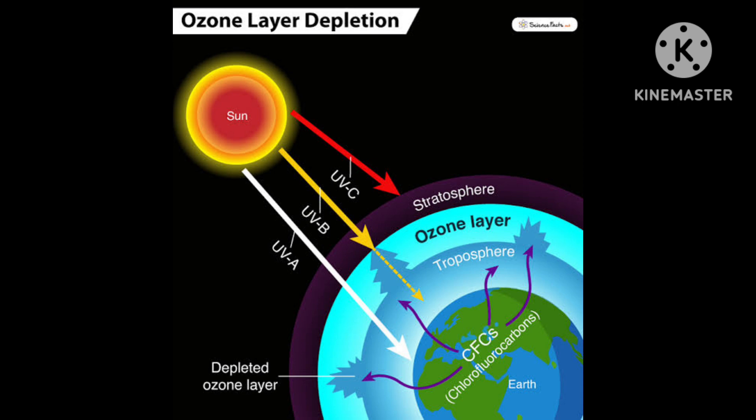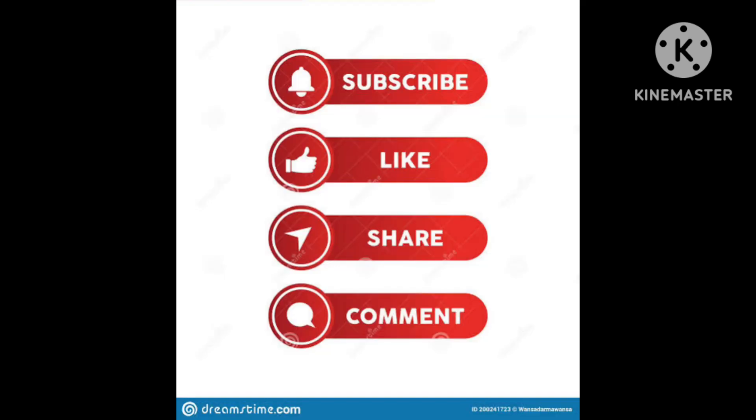That is why ozone layer depletion must be stopped. CFCs must be controlled and used judiciously, ensuring they do not escape into the atmosphere. If depletion continues, more UV rays will reach Earth and harm all life. Today I am stopping here; next class I will start water pollution. Thank you.